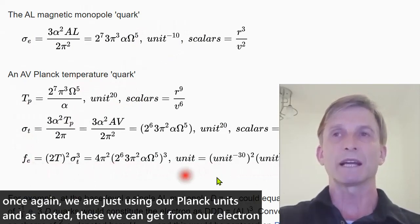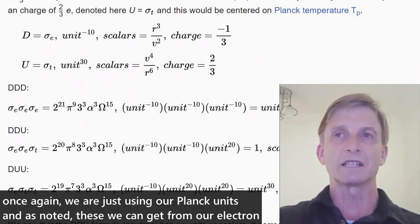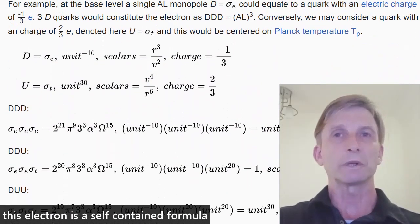The advantage with this approach is that we don't need quarks. And once again, we're just using our Planck units. And as noted, these we can get from our electron. This electron is a self-contained formula.